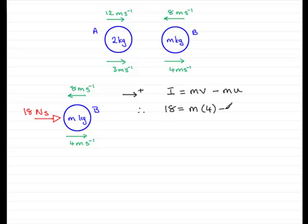Then we've got this minus and then the m. And then we've got u, the initial velocity. We've got 8 meters per second acting to the left, which is in the negative sense. So we need to put that as minus 8.